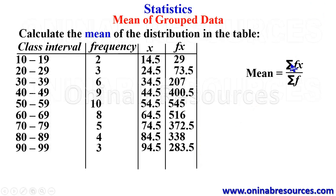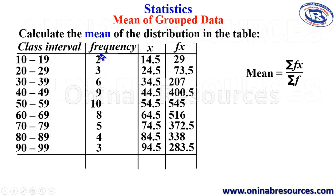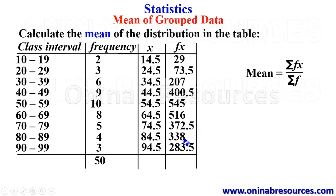The next step is to find the sum of the frequency column and the FX column. Summing the frequency column: 2 plus 3 plus 6 plus 9 plus 10 plus 8 plus 5 plus 4 plus 3 gives 50. Summing the FX column: 29 plus 73.5 plus 207 plus 400.5 plus 545 plus 516 plus 372.5 plus 338 plus 283.5 gives 2765.